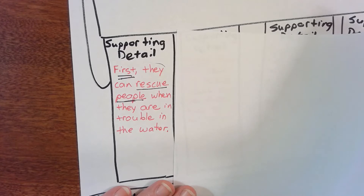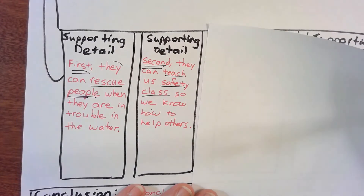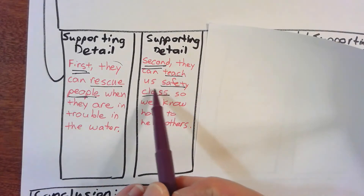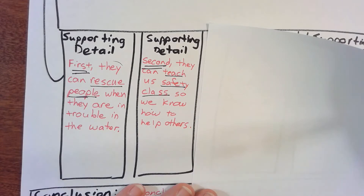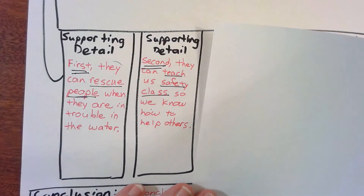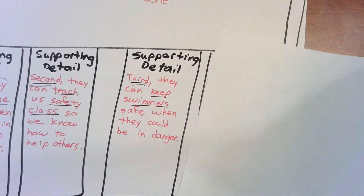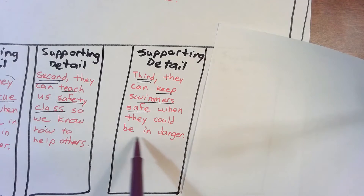The second detail they gave us is 'teach safety classes,' so with a transition word: 'Second, they can teach us safety classes so we know how to help others.' The third fact they gave us says 'keep swimmers safe,' so: 'Third, they can keep swimmers safe when they could be in danger.'